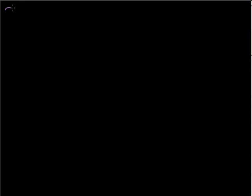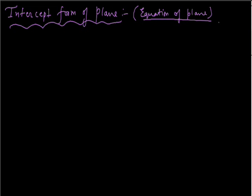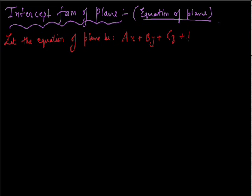Now let us learn to find the equation of a plane in the intercept form. We are going to discuss the intercept form of the equation of plane. Let the equation of the plane be Ax + By + Cz + D = 0, where D is not equal to zero.